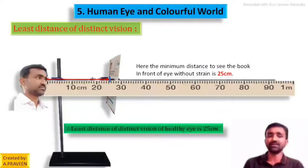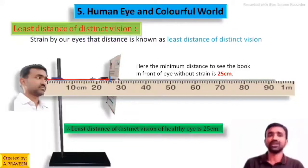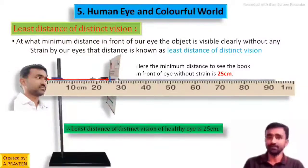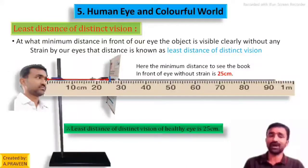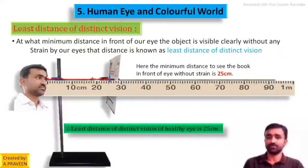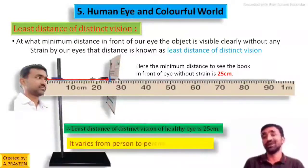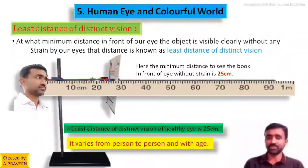We can define the least distance of distinct vision as: the minimum distance in front of our eye at which an object is visible clearly without any strain by our eye muscles — the ciliary muscles — and the text is clear without blur. That distance, 25 centimeters, is called the least distance of distinct vision. This distance is not the same for all — it varies from person to person and also with age.